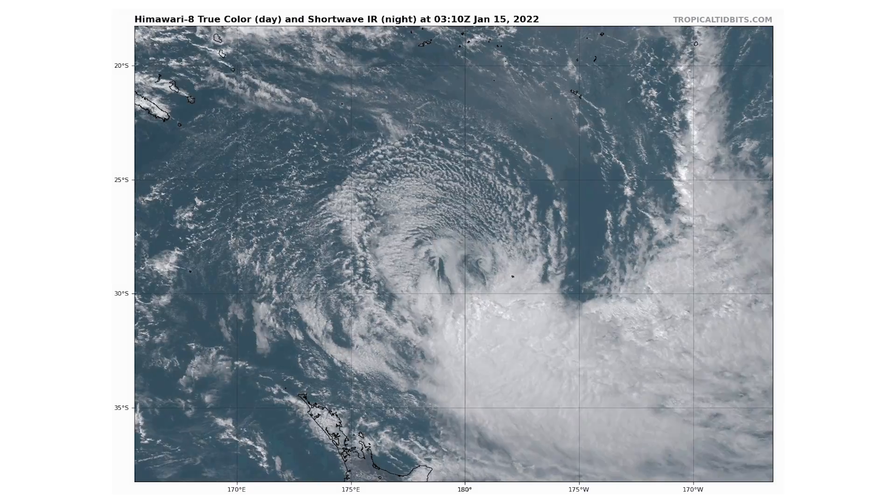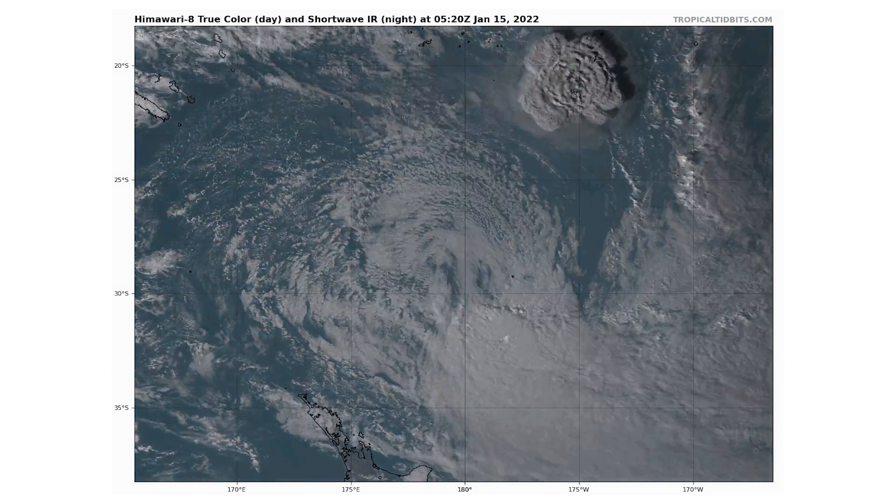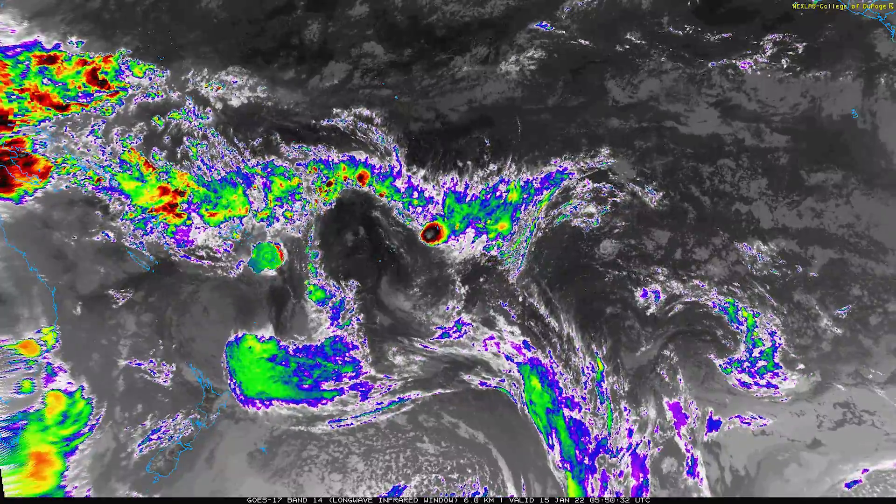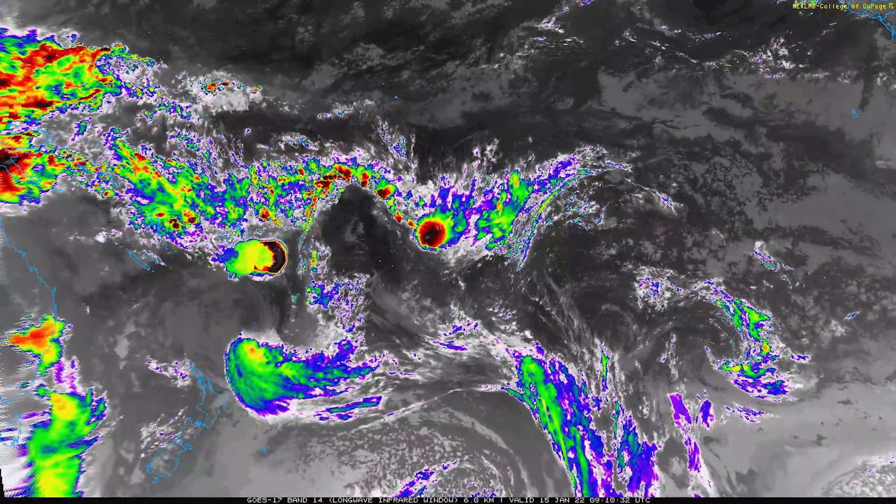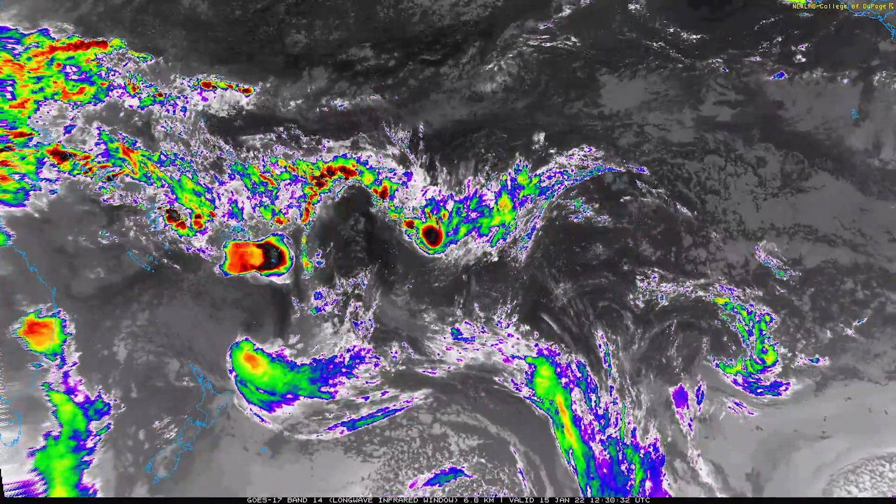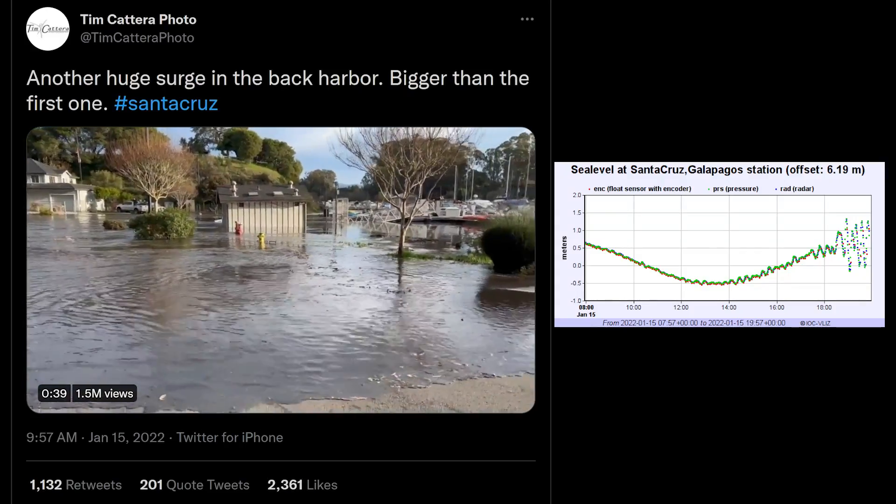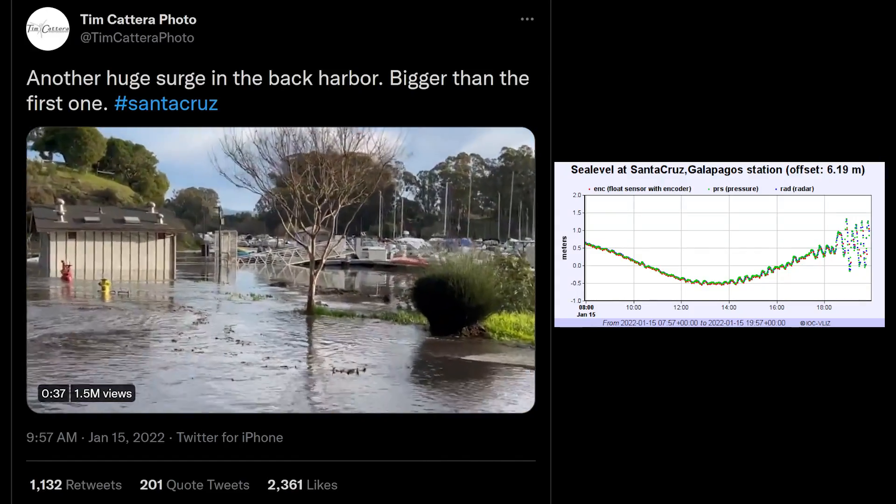In the early morning hours of January 15th, going by universal time, the Hunga Tonga volcano exploded with such force that it sent an atmospheric shock wave completely around the globe and a moderately strong tsunami seen all across the Pacific Ocean.